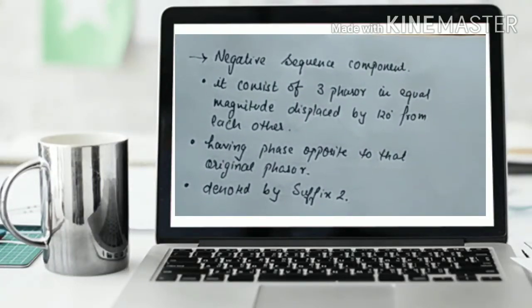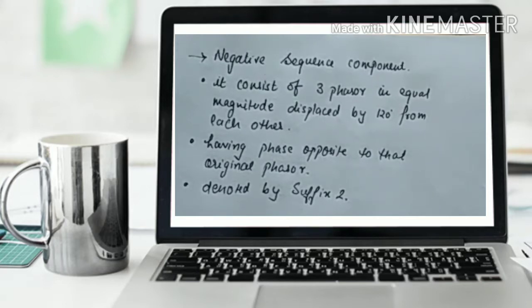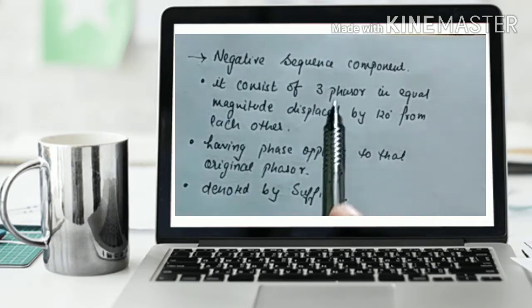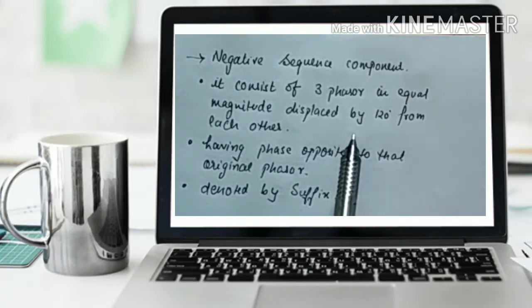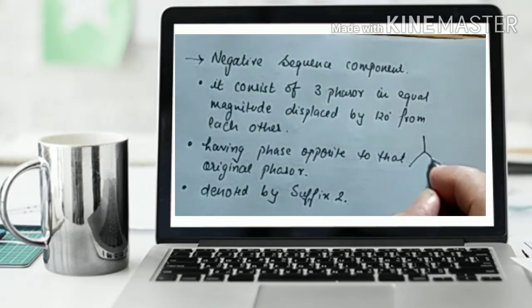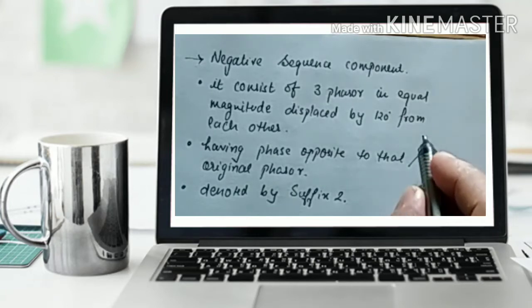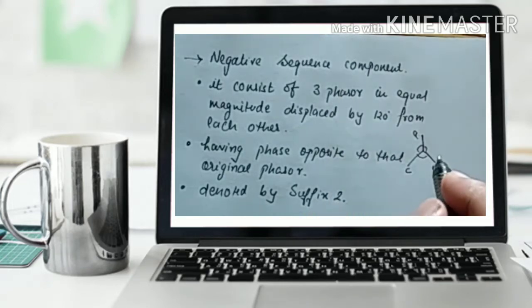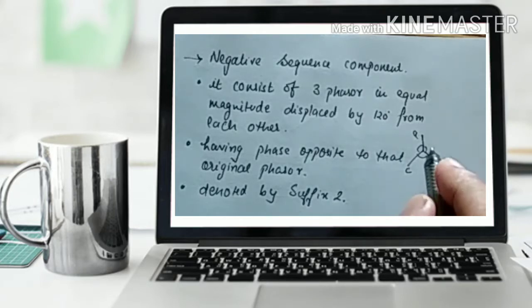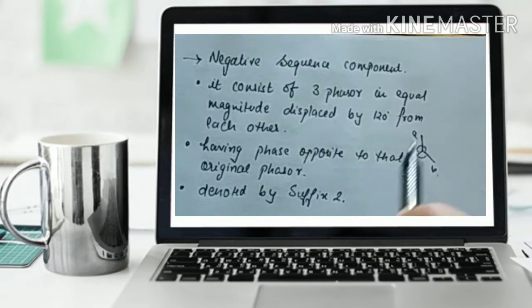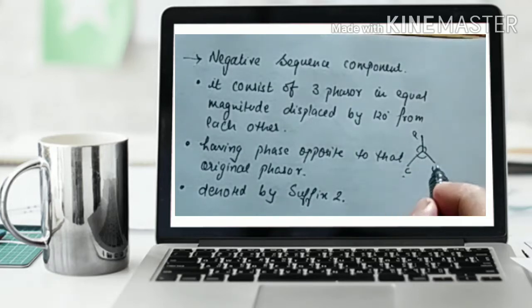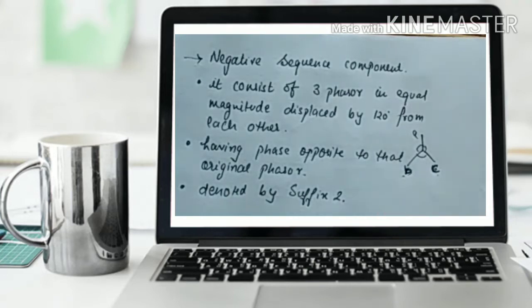Our next topic is negative sequence component. If you have not seen positive sequence component, please see the previous video or the playlist named 'Symmetrical Fault.' Coming towards the negative sequence component: in positive sequence component, the phasors are 120 degrees apart and equal in magnitude with ABC order, but in negative sequence component, the same magnitude and 120-degree displacement applies, however the phase order is reversed — it will be A, C, B.